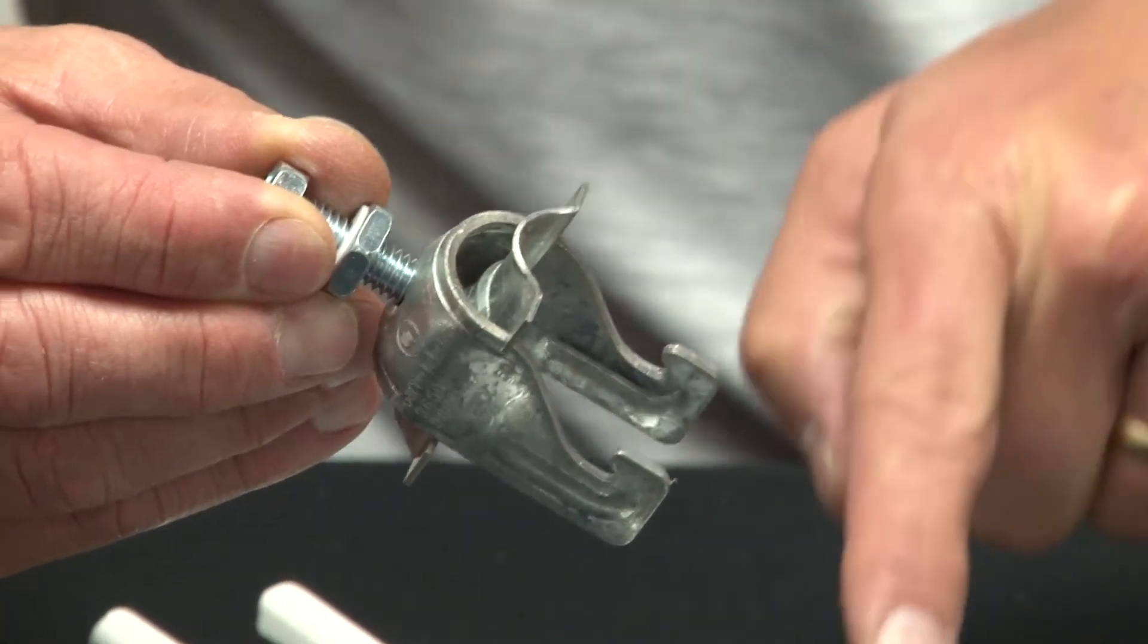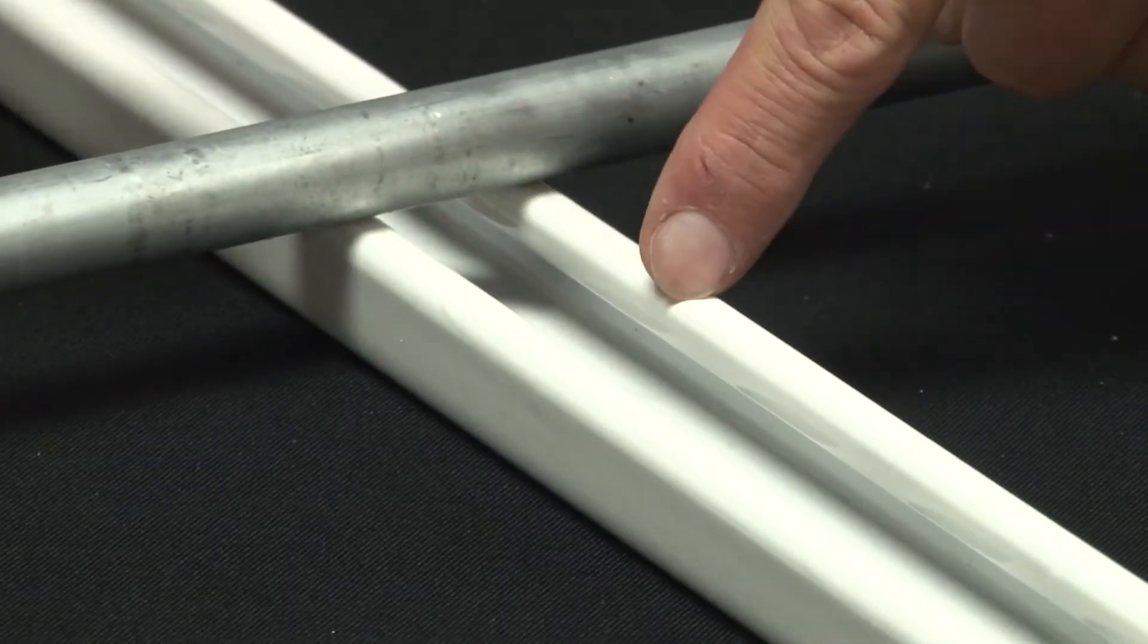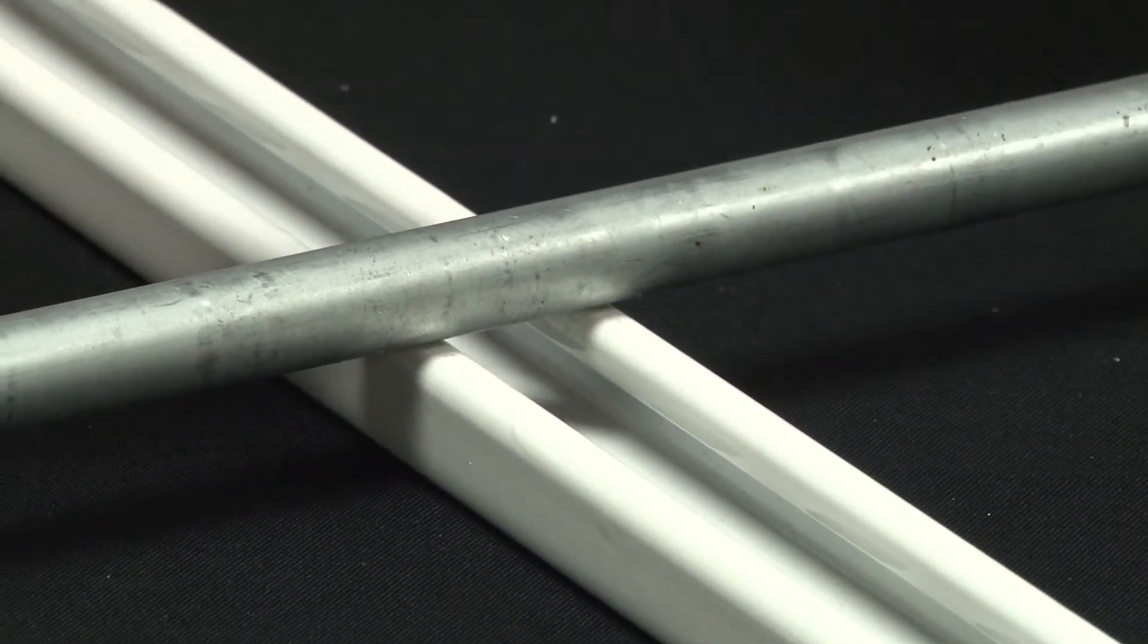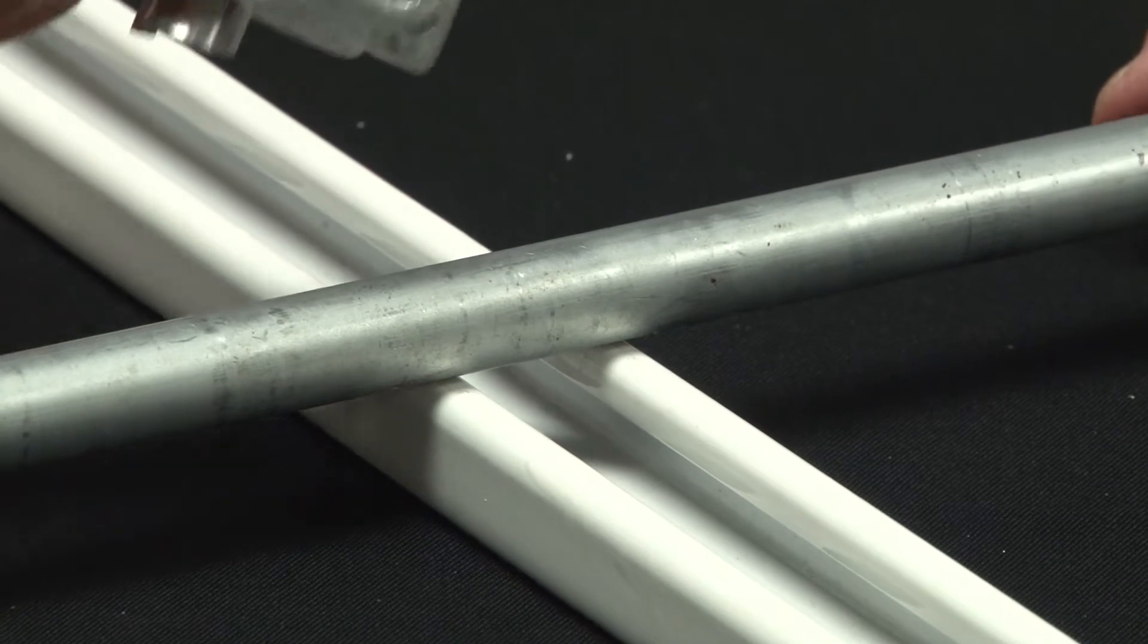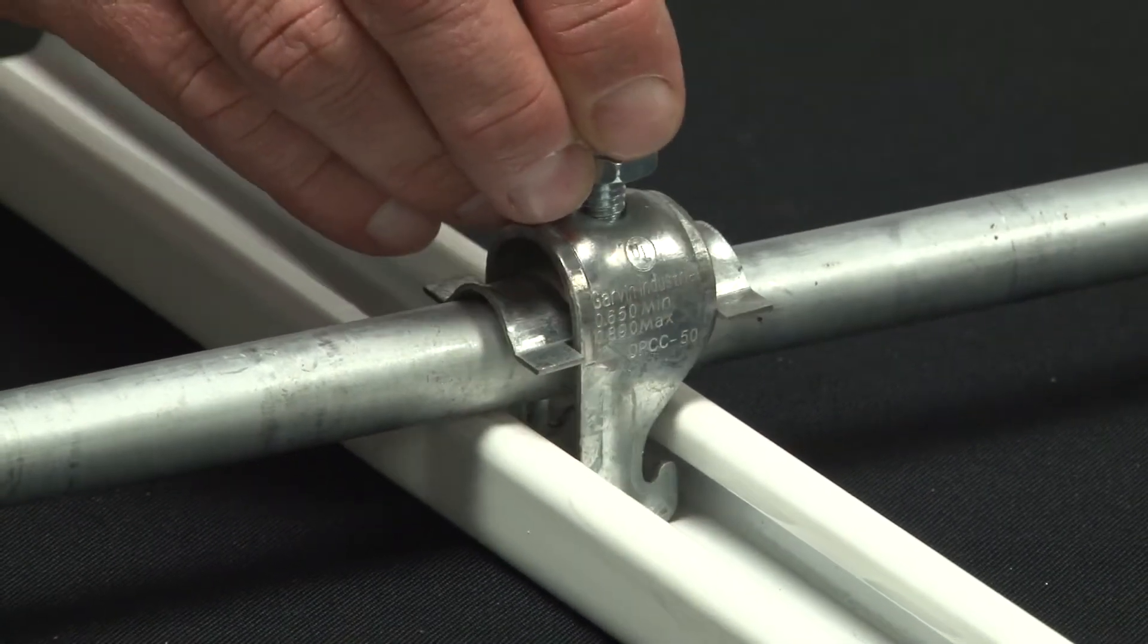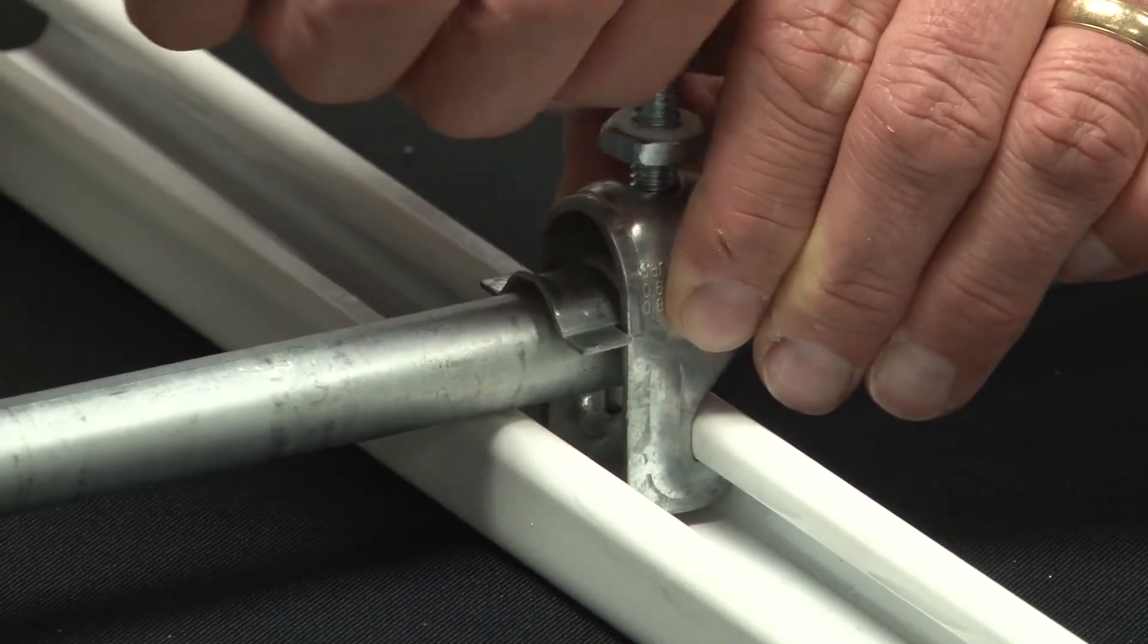You simply align the hooks with the interior edge of the unistrut and then tighten the bolt down, aligning the cradle with the conduit. So you slide it in, swing it over, align the cradle, and then screw it down.